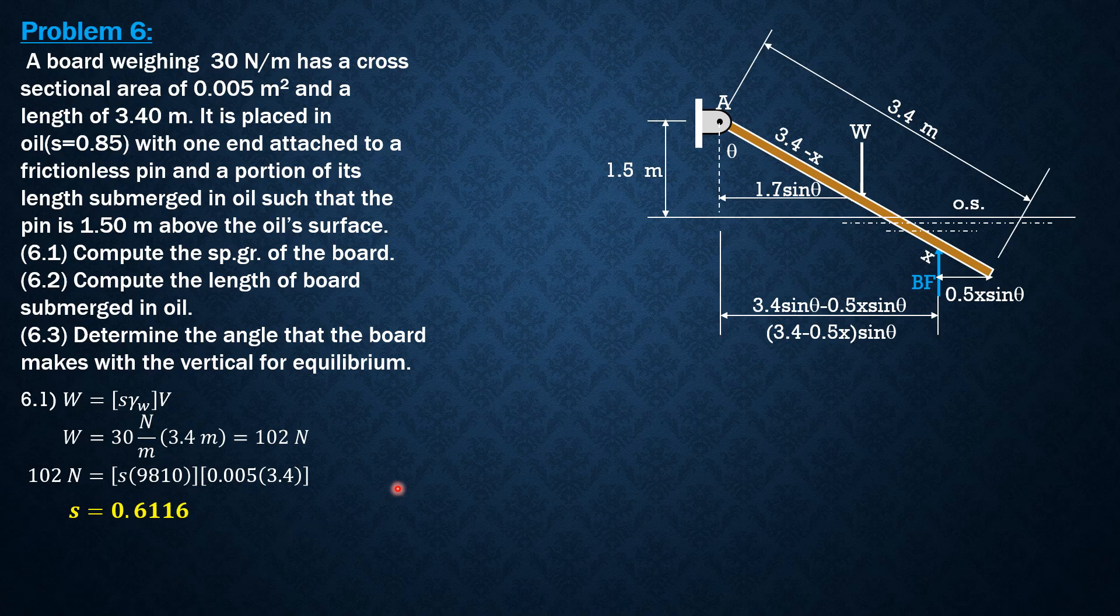For the second question, compute the length of the board submerged in oil. The buoyant force is specific weight of oil, 0.85 times 9,810 newtons per cubic meter times volume. The volume is cross-sectional area 0.005 times length that is submerged, which is x. Buoyant force is 0.85 times 9,810 newtons per cubic meter times volume submerged 0.005 times x. So that would be 41.69x.